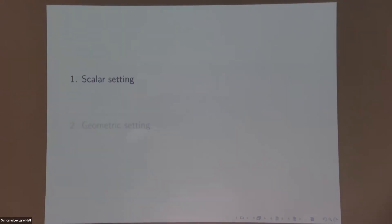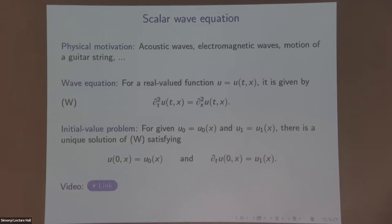So I'll first start with the scalar setting, which will be very basic, and then we'll move on to a geometric setting, which is a bit more complicated. Let me first tell you a little bit about the scalar wave equation. This is a model that appears all about physics, and you can use it to describe acoustic waves and electromagnetic waves. If you open a textbook, you'll often find it first if you want to describe the motion of a guitar string.